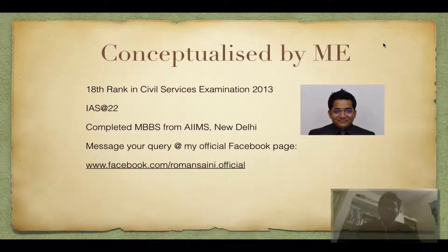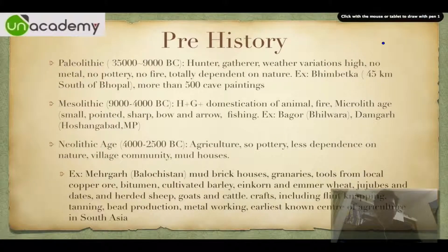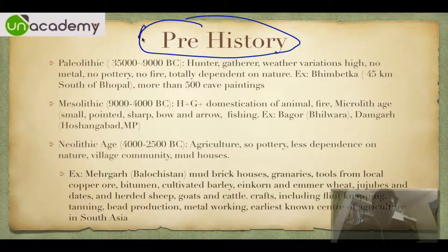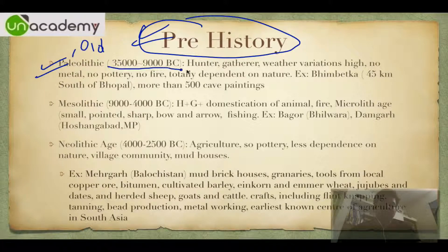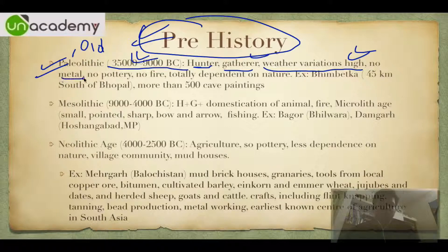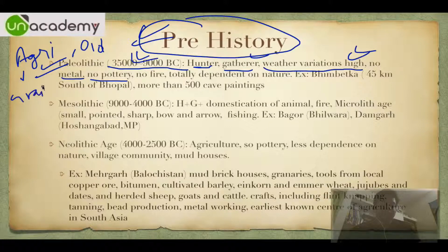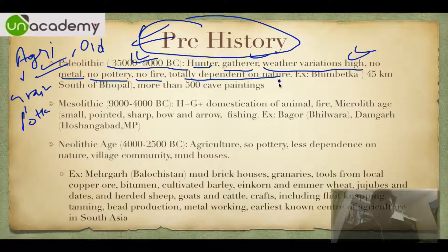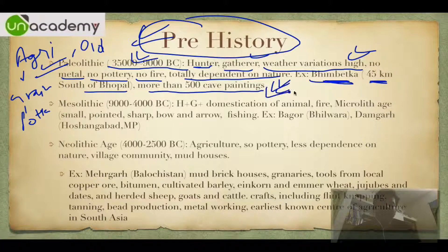We start with the Prehistory era. First is the Paleolithic era. 'Paleo' literally means old, ranging from 35,000 to 9,000 BC. They were just hunter-gatherers. Weather variations were quite high — ice age and all were there. There was no metal, no pottery, no fire, and no agriculture. They were totally dependent on nature. The site example is Bheembetka, near Bhopal, where more than 500 cave paintings of the Paleolithic era are found.